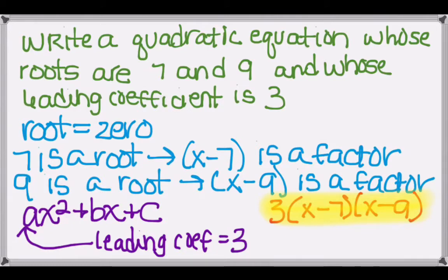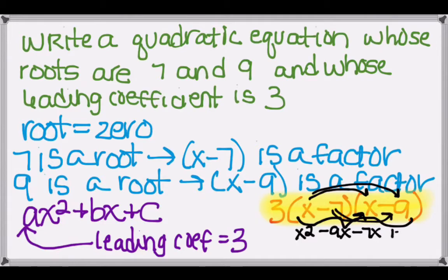And so the last thing I'm going to do for this problem is actually multiply everything through. And I'll start by just multiplying the (x minus 7) times (x minus 9) using FOIL. So we get x² minus 9x minus 7x plus 63.